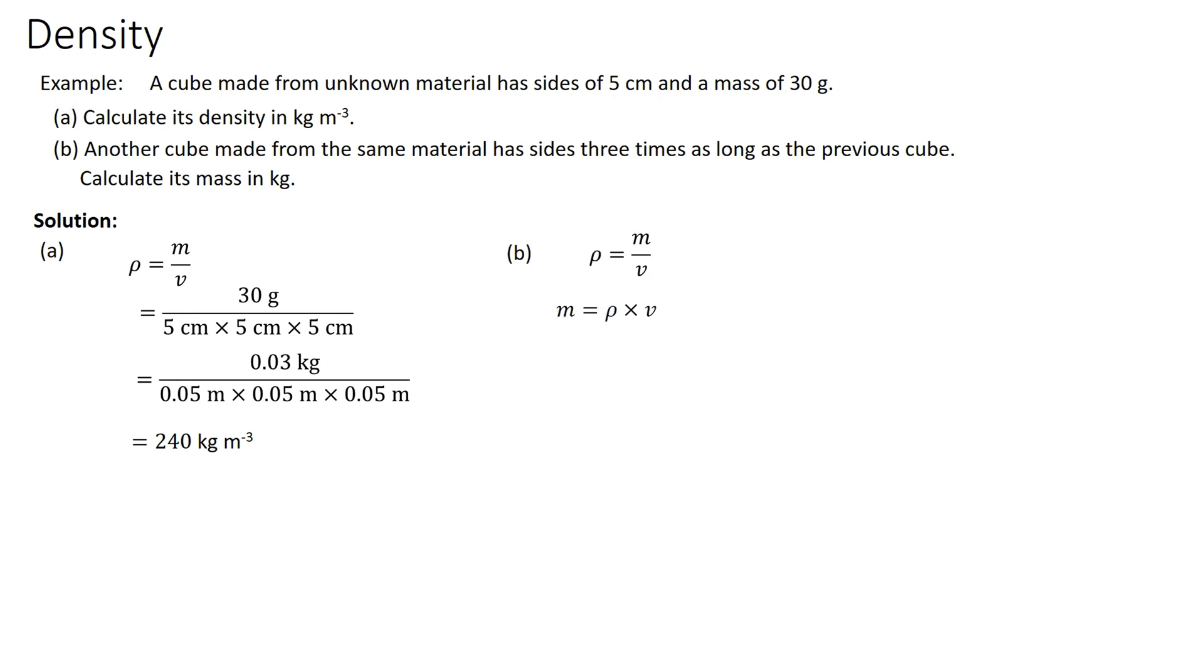For part (b) we use the same formula rho equals m over v, so mass is rho times v. Then rho is the same because they are using the same material which is 240, then times 0.15 times 0.15 times 0.15 and we get 0.81 kilograms.